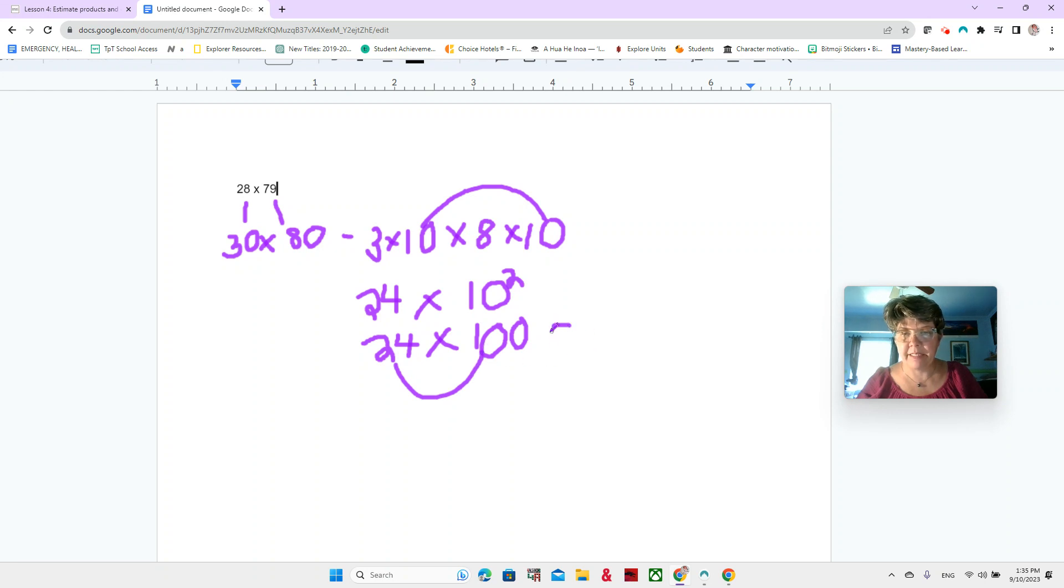So now we have 24 times 100. And this is an estimate. So 24 times 100 is 2400. Do you see that? Because we have the commutative property of multiplication. So we can switch the order around when we multiply.